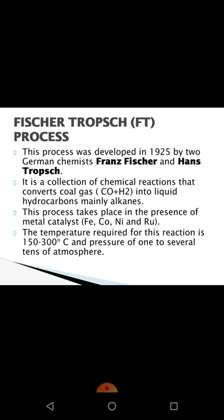The Fischer-Tropsch process is a collection of chemical reactions that converts coal gas into liquid hydrocarbons, mainly alkanes. The reactant is coal gas — first coal gasification produces coal gas, then in the next step we make petroleum from coal gas. The product is hydrocarbons, mostly alkanes. This process takes place in the presence of metal catalysts: iron, cobalt, nickel, and ruthenium. The temperature required is 150 to 300 degrees centigrade and pressure of one to several atmospheres.